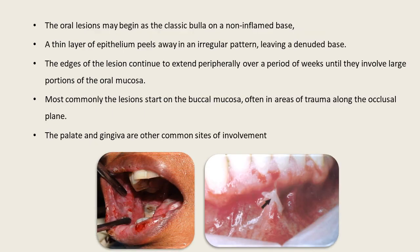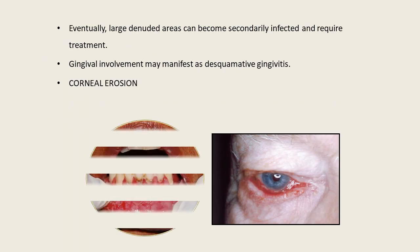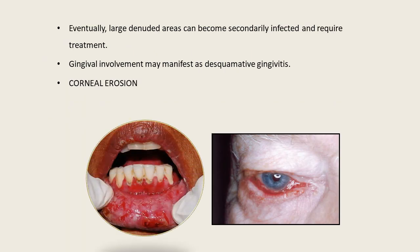In the oral cavity, the lesion may begin as a classical bulla on a non-inflamed base. A thin layer of epithelium peels away in an irregular pattern, leaving a denuded base. The edges of the lesion continue to extend peripherally over weeks until they involve large portions of the oral mucosa. Most commonly the lesion starts on the buccal mucosa in areas of trauma along the occlusal plane; the palate and gingiva are other common sites. Large denuded areas can become secondarily infected, and gingival involvement may manifest as desquamative gingivitis.